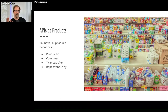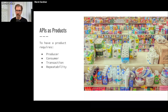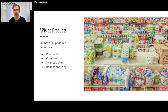There are four requirements you need here. You have to have a producer — the person or group that produces or possesses something of value, like a service that can solve a problem with code. A consumer is another party that wants to trade something; you're not just giving your APIs away for free. There's an exchange of value — that's the transaction. And then you need repeatability: you have to be able to do this again and to scale it for it to be a product.